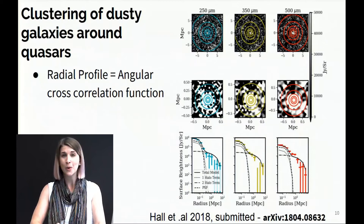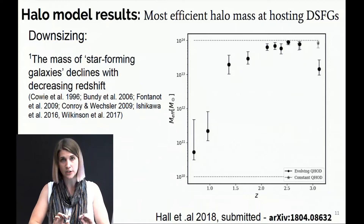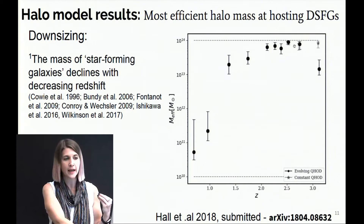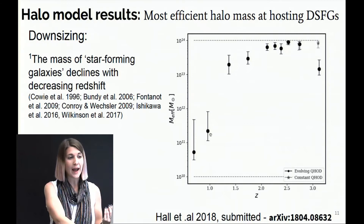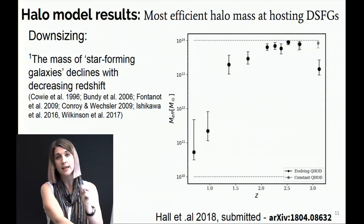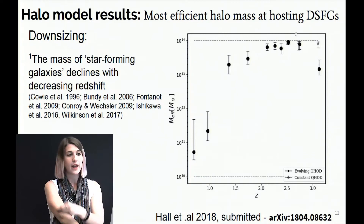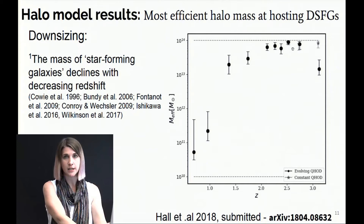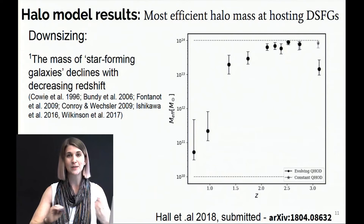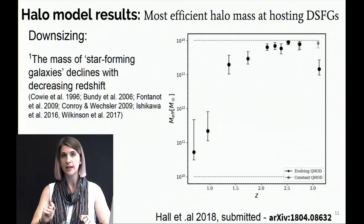We model these angular cross-correlation functions in terms of the dark matter halo masses of the dusty galaxies living in the environments of quasars. What we find for the most efficient halo mass at hosting dusty star-forming galaxies as a function of redshift is shown in this plot. On the y-axis we have M-efficient, and on the x-axis we have redshift. The distribution rises with redshift until around z of 2.9, indicating that the dark matter halo masses hosting dusty galaxies increase with increasing redshift. Conversely, at high redshift, dusty galaxies lived in much more massive dark matter halos than they do in the present-day universe. This result is consistent with a concept known as cosmological downsizing — the idea that the mass of star-forming galaxies declines with decreasing redshift, with the most intense star formation living in the most efficient halo masses declining with decreasing redshift.